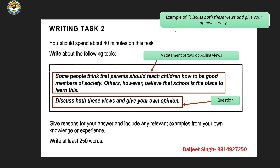Sample question: 'Some people think that parents should teach children how to be good members of society. Others, however, believe that school is the place to learn this.' There are two statements here — the first is about parents, the second about school. You need to discuss both views and present your own opinion.